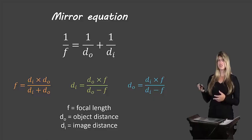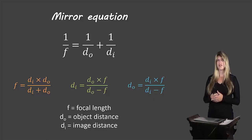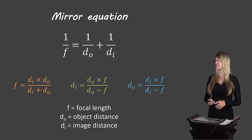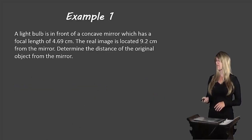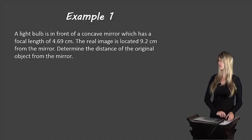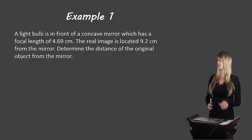Let's recap what the letters represent: F is the focal length, DO is the distance of the object, and DI is the distance of the image. Now let's look at an example of how we would solve this type of question.